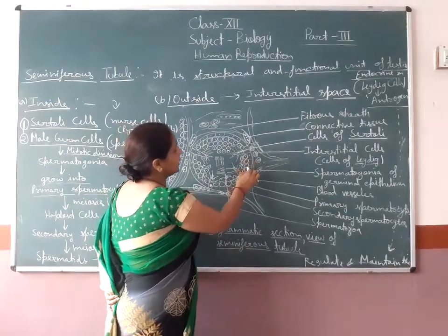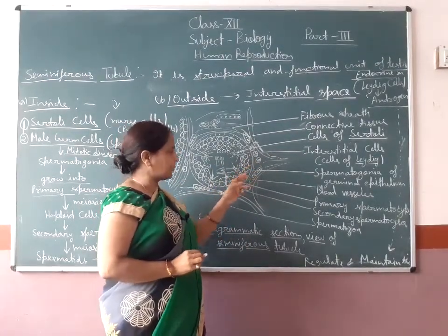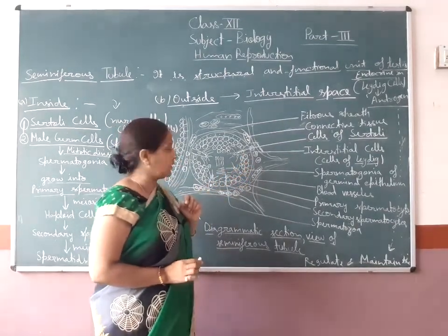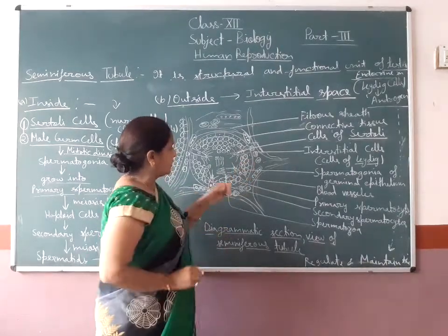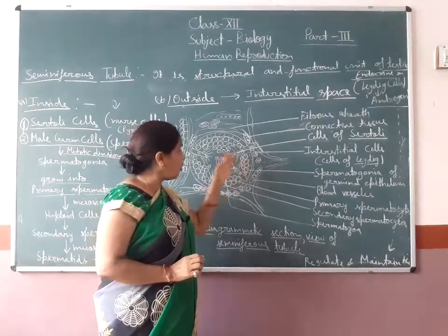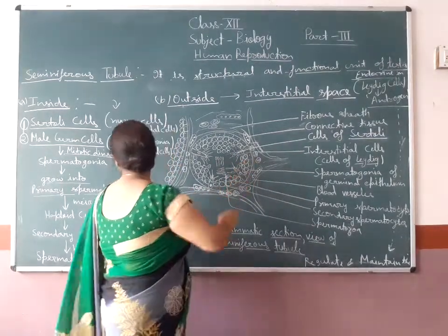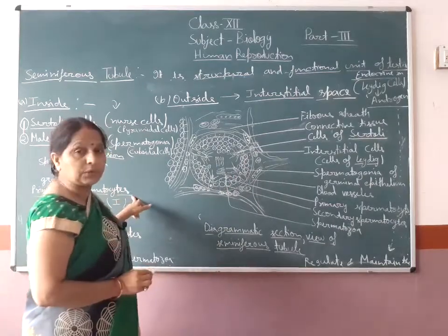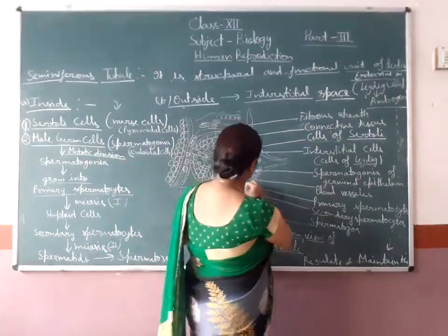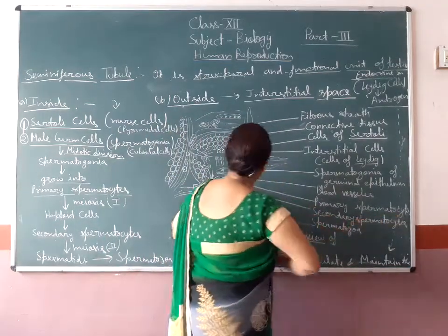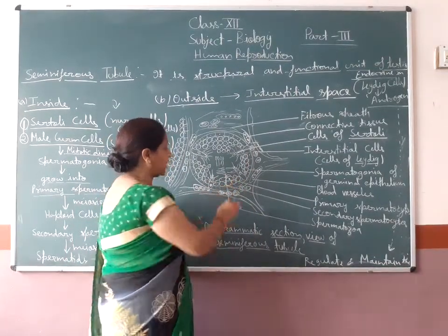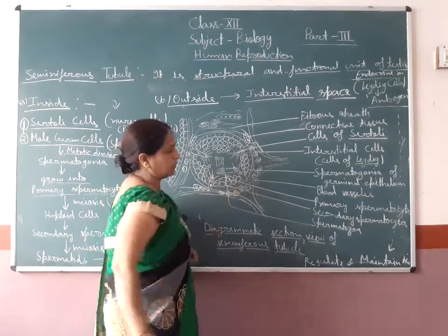The spermatogonia of germinal epithelium divides mitotically and forms spermatogonia. This spermatogonia then grows and develops into primary spermatocytes. As you can see written here: germinal layer, spermatogonia, then primary spermatocytes.